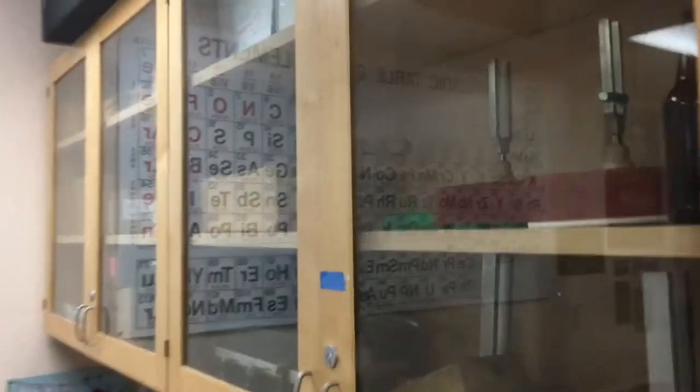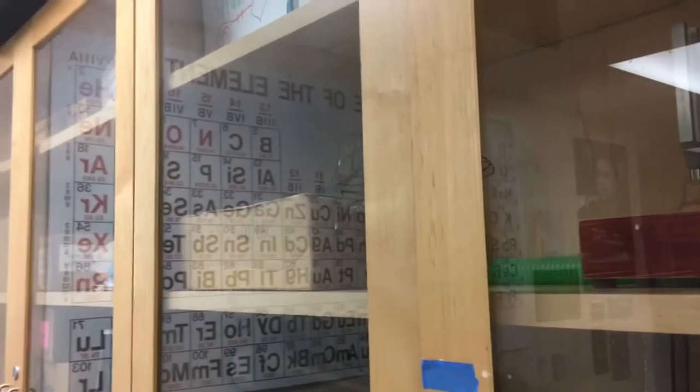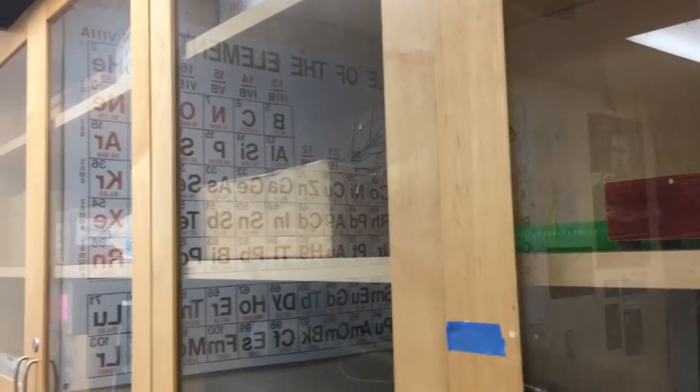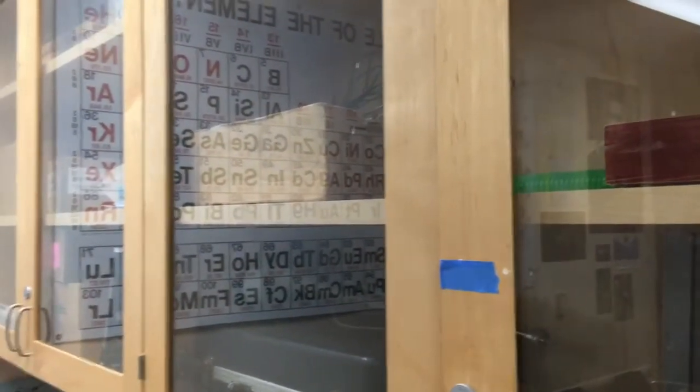However, something very interesting happens when light reflects off of a shiny non-metallic surface. Now, I think you can see in the windows to these cabinets that the periodic table is visible, reflected in the glass.